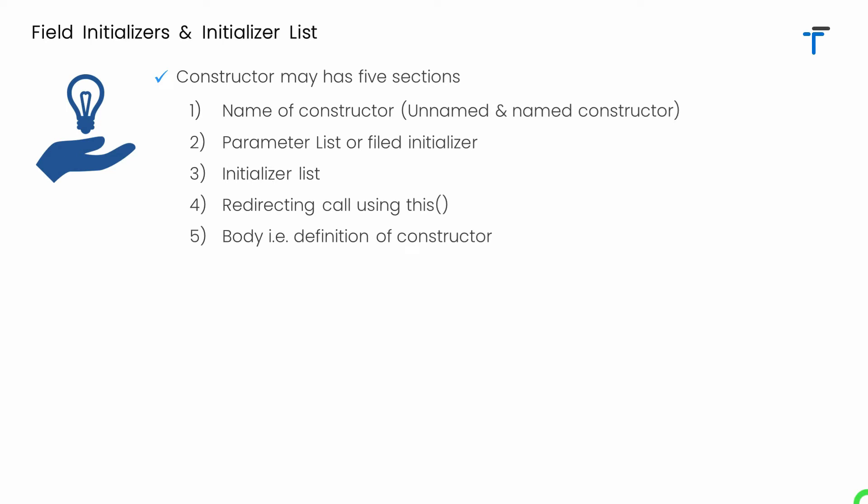The constructor of Dart may have five sections. First is the name of the constructor — that is the default constructor or a named constructor as per your choice. Second is the parameter list or the field initializer. Third is the initializer list. Fourth is redirecting call using this — if you don't know about this, watch the previous video. And the last section is the body, which is the definition of the constructor enclosed within opening and closing curly brackets.